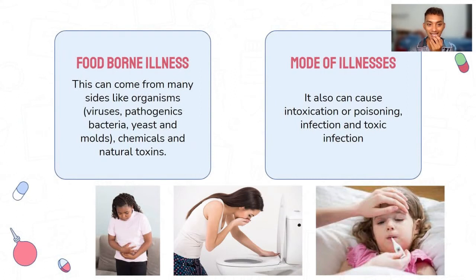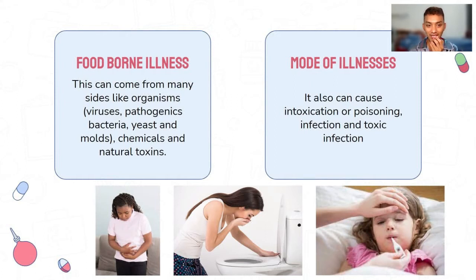For this slide, I will discuss foodborne illness and the modes of illness caused by foodborne agents. Foodborne illness can come from many organisms such as viruses, pathogenic bacteria, yeast and molds, chemicals, and natural toxins. The modes of illness include intoxication or poisoning, infection, and toxic infection.